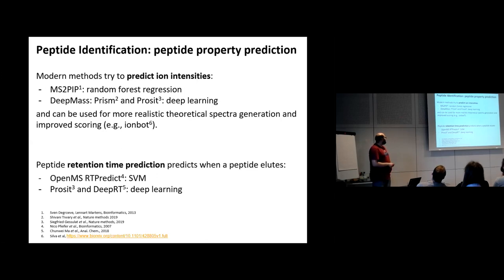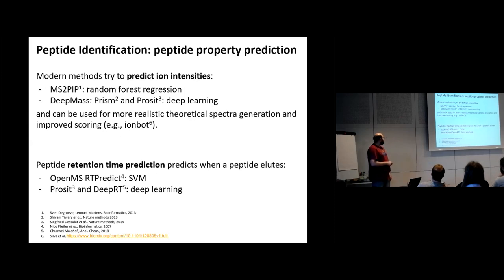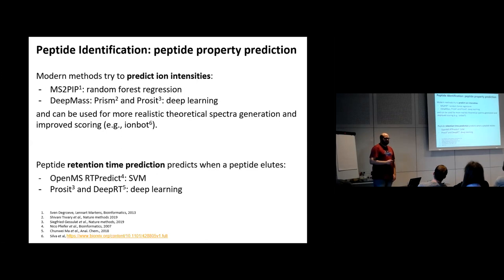Retention time prediction can also be used as an additional filter on the precursor mass for initial candidate filtering. Tools available for this include OpenMS RTpredict using support vectors machines, and Prosit and DeepRT using neural networks to predict retention times as well.